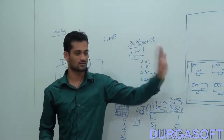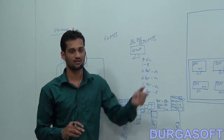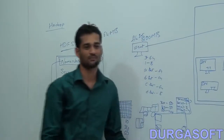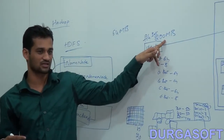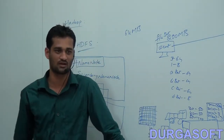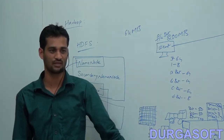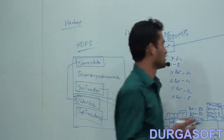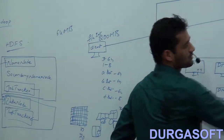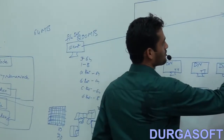The Name Node tells the client to store the 200 MB file in data nodes 1, 3, 5, and 7, which have free space. Now the client knows which data nodes to approach and directly stores the data. For example, A.txt is stored in data node 1. Each data node has around 250 GB or 500 GB of hard disk capacity, giving 3,750 or 7,500 blocks respectively.